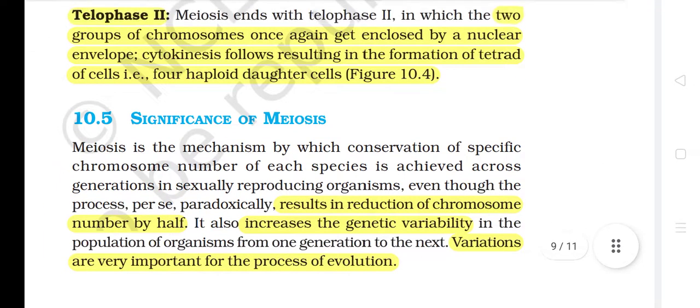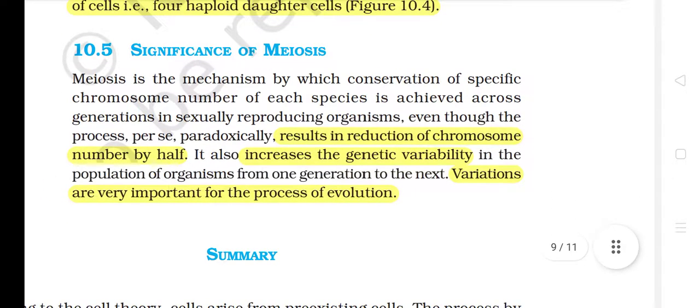10.5 Significance of Meiosis. Meiosis is the mechanism by which conservation of a specific chromosome number of each species is achieved across generations in sexually reproducing organisms, even though the process paradoxically results in reduction of chromosome number by half. It also increases the genetic variability in the population of organisms from one generation to the next. Variations are very important for the process of evolution.